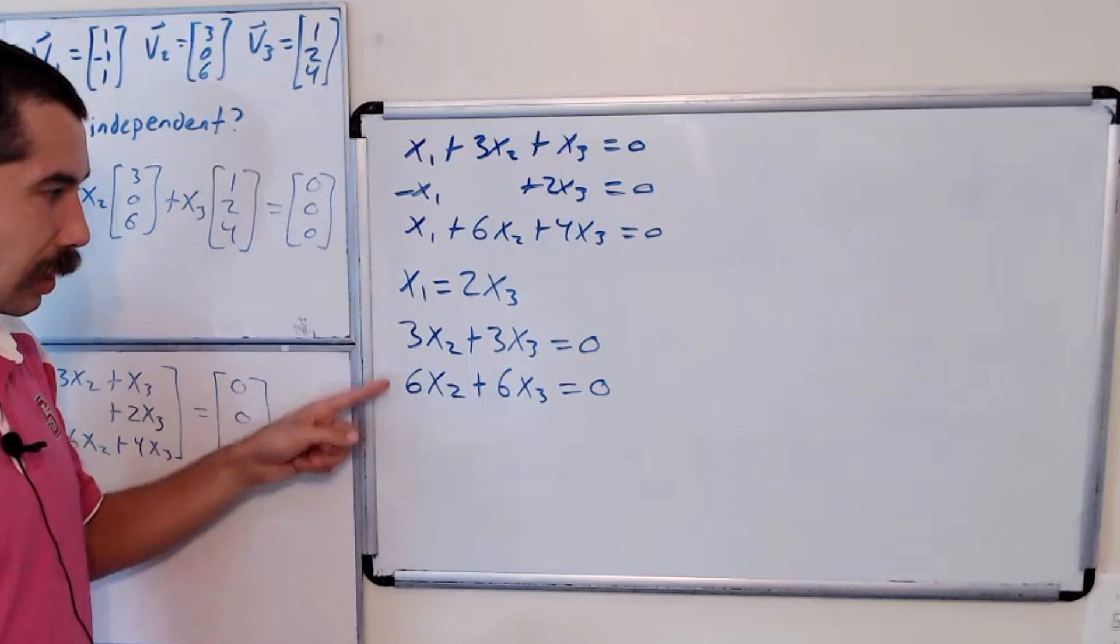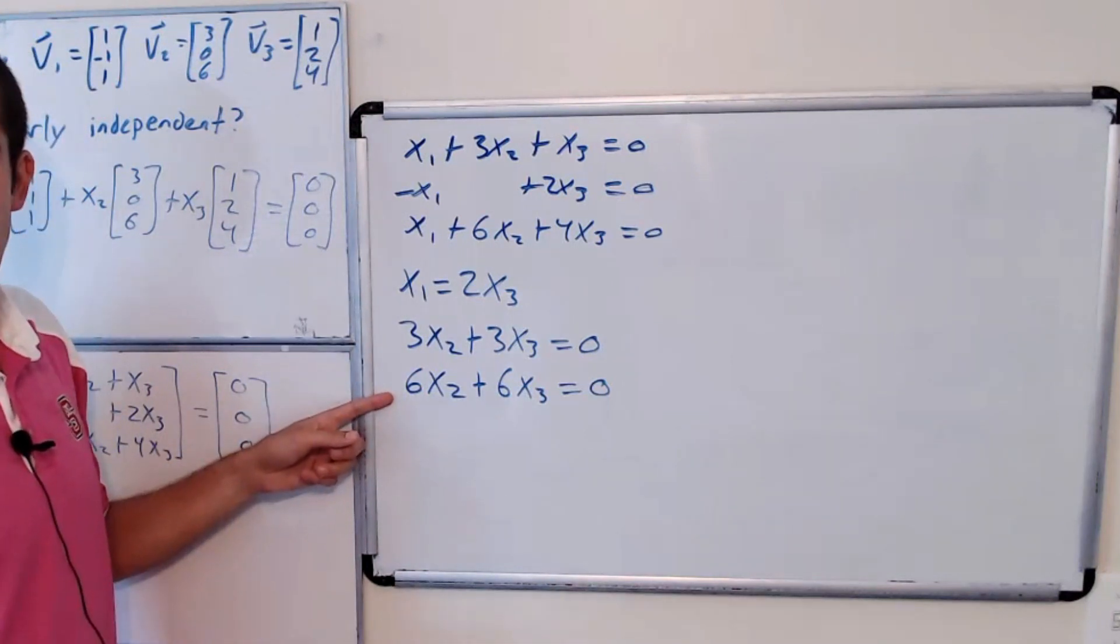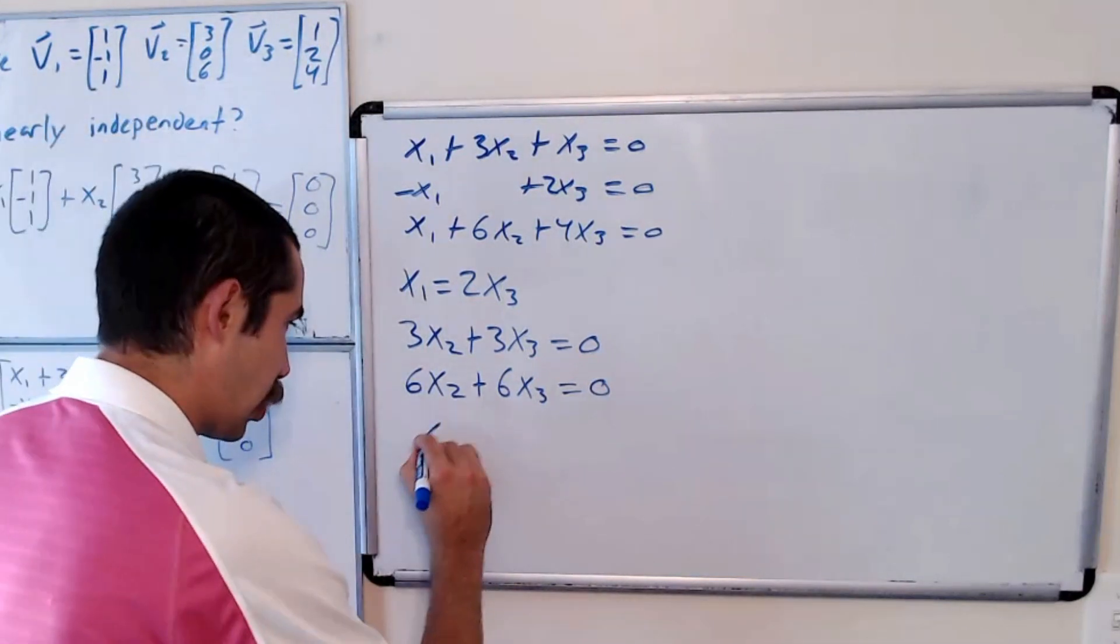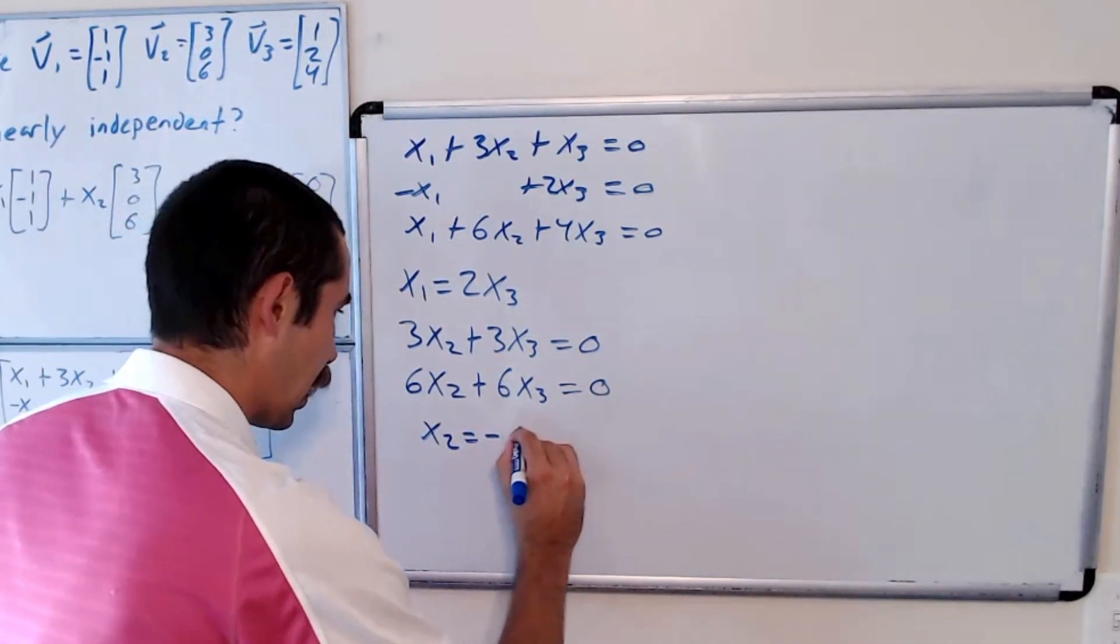Now notice both of these are the same equation. They both simplify to x2 is equal to negative x3.